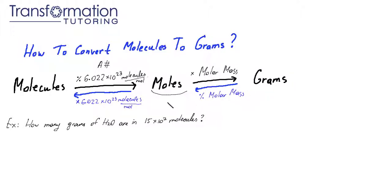Now, if we want to go the other way around, if we want to go from grams to molecules, we do the opposite. To go from grams to moles, we divide our number of grams by the molar mass, and then we will go from moles to molecules by multiplying our number of moles by the Avogadro's number, which is 6.022 times 10 to the 23 molecules per mole.